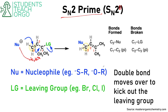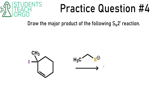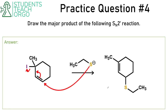Let's look at a practice question: draw the major product of the following SN2 prime reaction. You can see that this would be our product — pretty straightforward. The sulfur would be the nucleophile, it would attack at that carbon right there, the double bond would move over, and iodine would be a great leaving group. This is what the product of the SN2 prime reaction would look like.